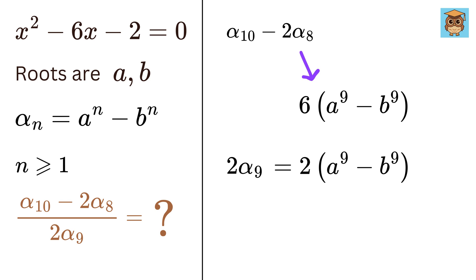Thus our answer will be numerator upon denominator, or this over this. This will get canceled out, and we have the answer as 3.